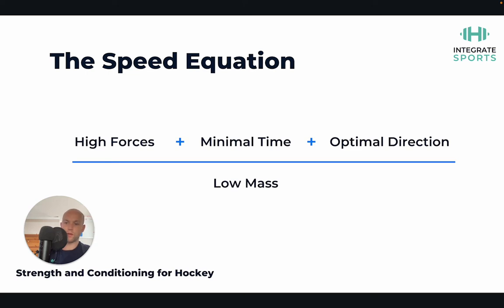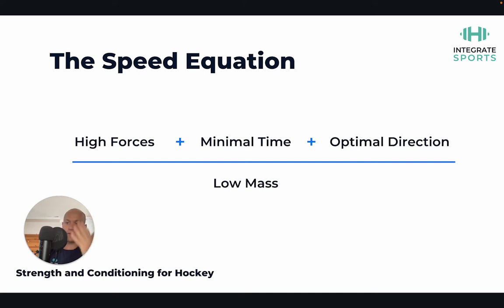Minimal time refers to the elasticity of an athlete. If you have really elastic tendons, whenever your foot hits the floor a tendon will elongate — the less it does that, because the stiffer the tendon, the quicker you can recycle forces. This is something called Young's modulus: the stiffer the tendon, the faster we can recycle forces and get off the ground fast. If you think about a really springy elastic athlete, that's ultimately what we're thinking about — and we'll go over that in more detail in the plyometrics video.